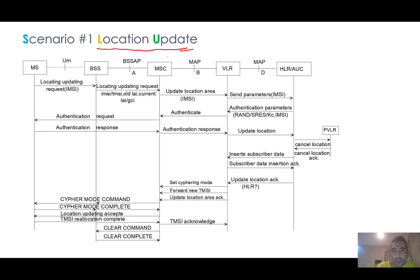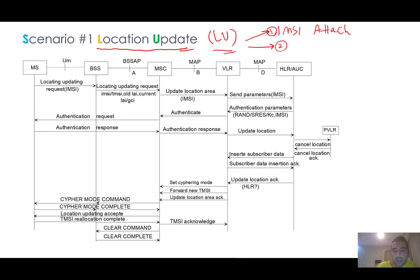Location update, or LU, has different kinds. I can share a document of more than 100 pages if you send me an email or comment. According to the standard, the first type is IMSI Attach — this happens when you power on your mobile device. The second is General Location Update, which happens when you change your location. Based on the network configuration, for example when moving from one MSC area to another MSC area, a location update will occur.